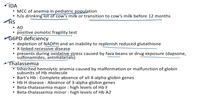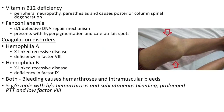Thalassemia: inherited hemolytic anemia due to malformation of globin subunits of hemoglobin. Barts hemoglobin has complete absence of all four alpha globin chains; HbH disease has absence of three alpha chains; beta-thalassemia major has high HbF; beta-thalassemia minor has high HbA2. Vitamin B12 deficiency: peripheral neuropathy, paresthesias, and posterior column spinal degeneration. Fanconi anemia: defective DNA repair; presents with hyperpigmentation and café-au-lait spots.